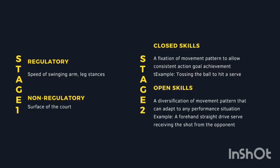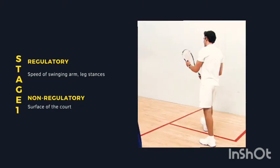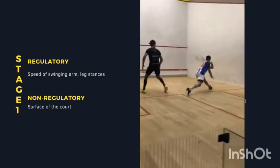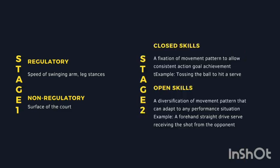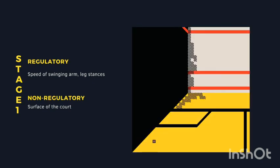In stage one, you need to be able to discriminate between regulatory and non-regulatory conditions. Regulatory conditions are the characteristics and environment which directly influence the movement required to reach a goal. In the context of squash, one example is the speed of the swinging arm and also the body stances. As for non-regulatory conditions, they are characteristics and environment that do not directly influence the movement required to reach a goal — for example, the surface of the court.